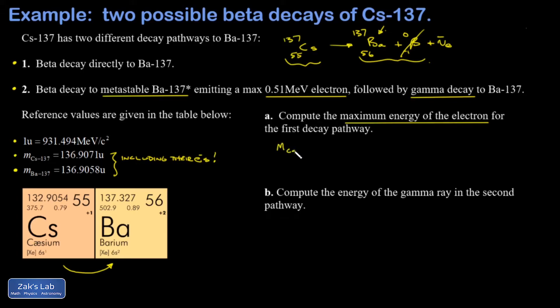The strategy here is to look at the mass of what we started with: the cesium-137. That's 136.9071 atomic mass units, and I'm going to convert those to MeV per c squared right now. When I run the numbers on this, I get 1.27528 times 10 to the fifth MeV per c squared. Now we're looking for a rather small effect, so I'm keeping a lot of precision.